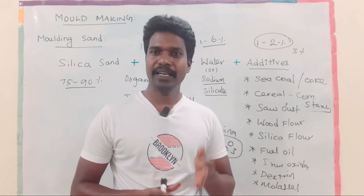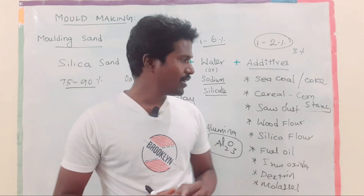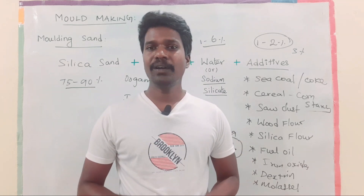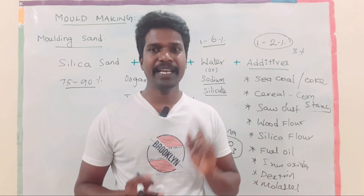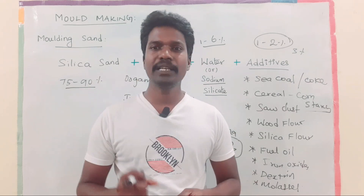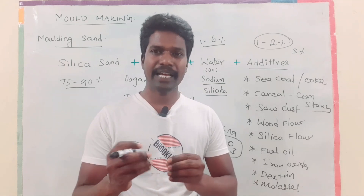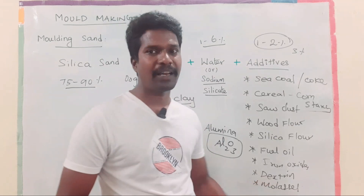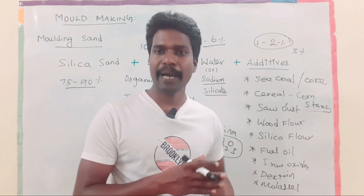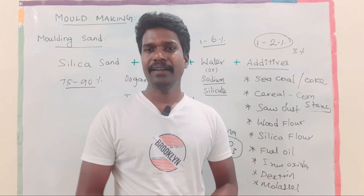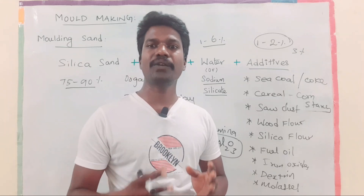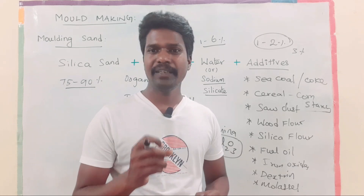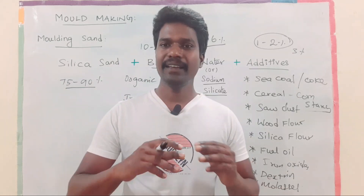Iron oxides improve the higher temperature strength of molding sand. Dextrin increases toughness and setting strength of molding sand, and also improves collapsibility. Molasses releases CO2 gas, which allows sand particles to expand into the gaps.